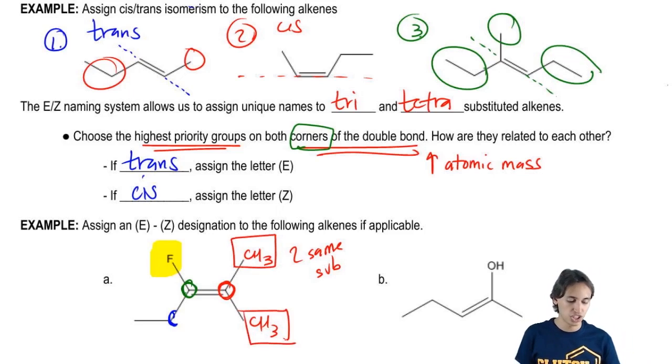They're both the same thing. So actually, this one is going to be not available. I can't assign cis and trans unless there's different things on both sides.